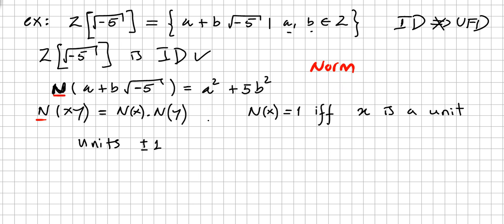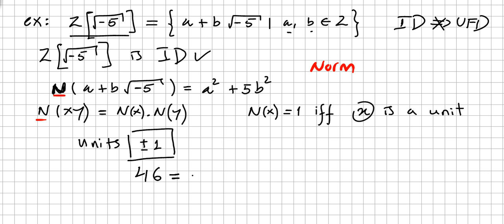This norm satisfies: N(xy) equals N(x) times N(y). Also, N(x) equals 1 if and only if x is a unit. So the only units in this ring are +1 and −1. Now let us consider the number 46, an element in the ring, and factor it. So 46 equals 2 times 23.